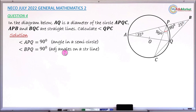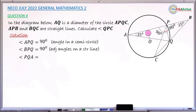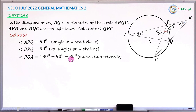I am finding angles with the aim of eventually finding angle QPC. Next, I can find angle PQA. I have two angles inside this triangle, so I can find the third using the sum of angles in a triangle. Angle PQA equals 180 minus 90 minus 35, which gives 55 degrees.